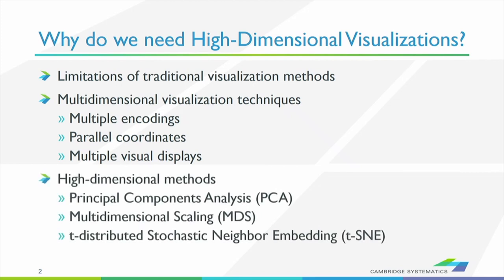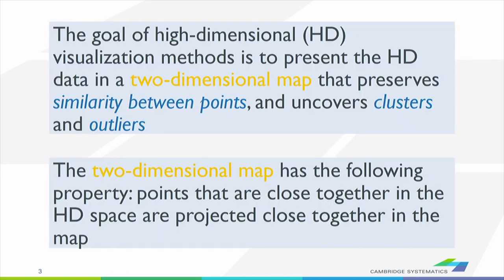There are other visualizations called parallel coordinates that can help you visualize something like 10 or 15 variables simultaneously to understand relationships. Multiple visual displays uses multiple instances of frequently used visualizations such as scatter plots. High-dimensional visualizations apply specific machine learning algorithms that take the data and project them onto a plane. This is what they call an ill-posed problem, so it's not easy to do, and interpreting the result is not always intuitive. We'll go through a number of case studies that demonstrate the potential of these techniques. The goal is to present high-dimensional data — 50, 150, or 10,000 columns — in a two-dimensional map that preserves similarities between points, clusters, and outliers.